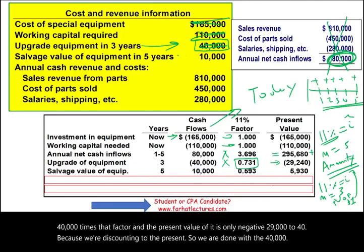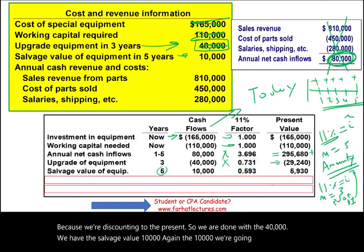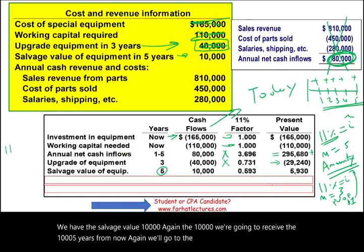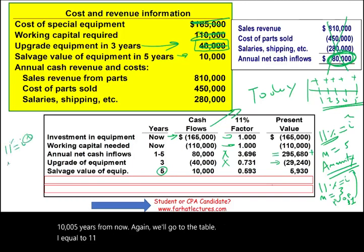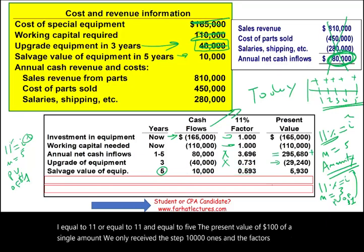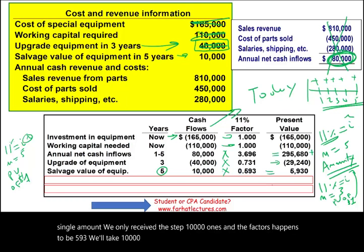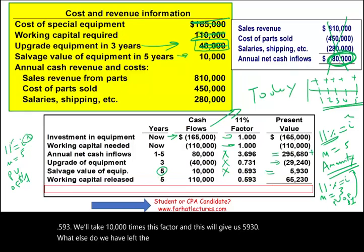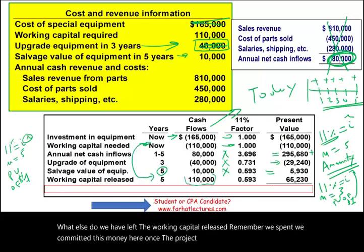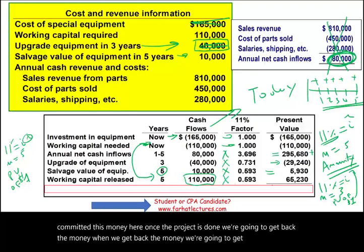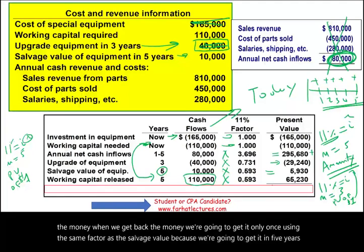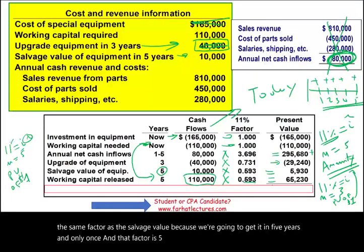For the $10,000 salvage value, we receive it once in five years. Using the present value of a single dollar table with I equal to 11% and n equal to 5, the factor is 0.593. That gives us $5,930. The working capital of $110,000 is also released at year five — received once — using the same factor of 0.593, giving us $65,230.